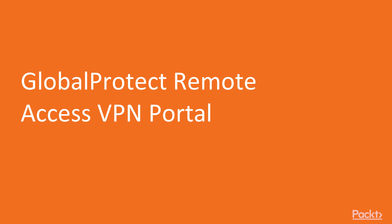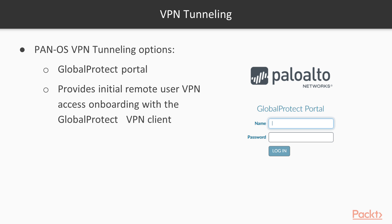In this video we're going to take a look at configuring the GlobalProtect portal. This is step one and involves enabling the portal, which is a web front end enabled on the Palo Alto's external-facing interface to allow remote users to download the GlobalProtect client. Once they install that client on their endpoints, they can establish a VPN tunnel to the environment via the GlobalProtect gateway. We need to create an authentication profile that will be attached to the portal, so any user who is a member of the allowed security group can sign in and download the client.